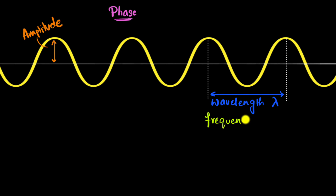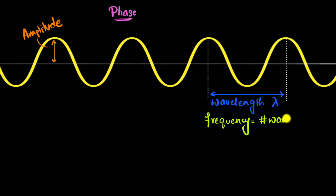One last important feature of a wave is its frequency. Take any point you want and measure how many waves go past that point in one second. The number of waves passing through a point per second is what we call frequency. The unit of wavelength is meters because you're measuring distance.